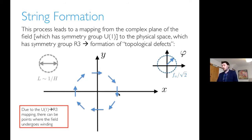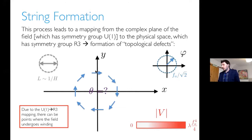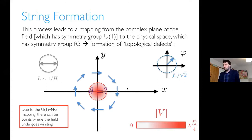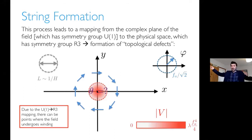That means the axion field theta is not defined at the center of any such point. The only way that can be true is if the complex field is at the origin, meaning the potential takes the value in the middle of the wine bottle potential — lambda to the fourth over four — so the potential takes a very large value there. This generalizes from the plane to R3: these are not just windings around a point, but windings around continuous one-dimensional structures called cosmic strings, which can be either infinite or form closed loops.